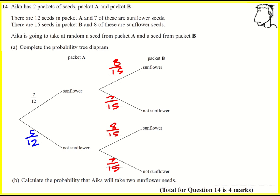We then want to find out the probability that Acre will take two sunflower seeds. That's going to be this route here and what we do is multiply our probabilities.